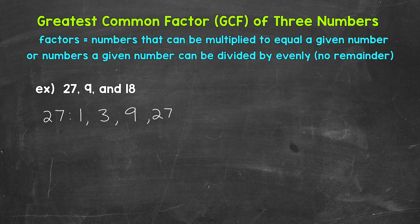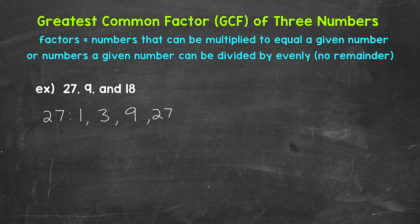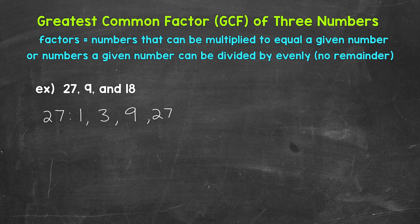And like I mentioned earlier, we can also think of these factors in terms of division. We can divide 27 evenly by all of these factors. Now one thing I do want to mention about factors and writing out factor lists is that you will get a lot better the more you do. Everything from writing and recognizing factors to the spacing of your lists. So something to keep in mind.